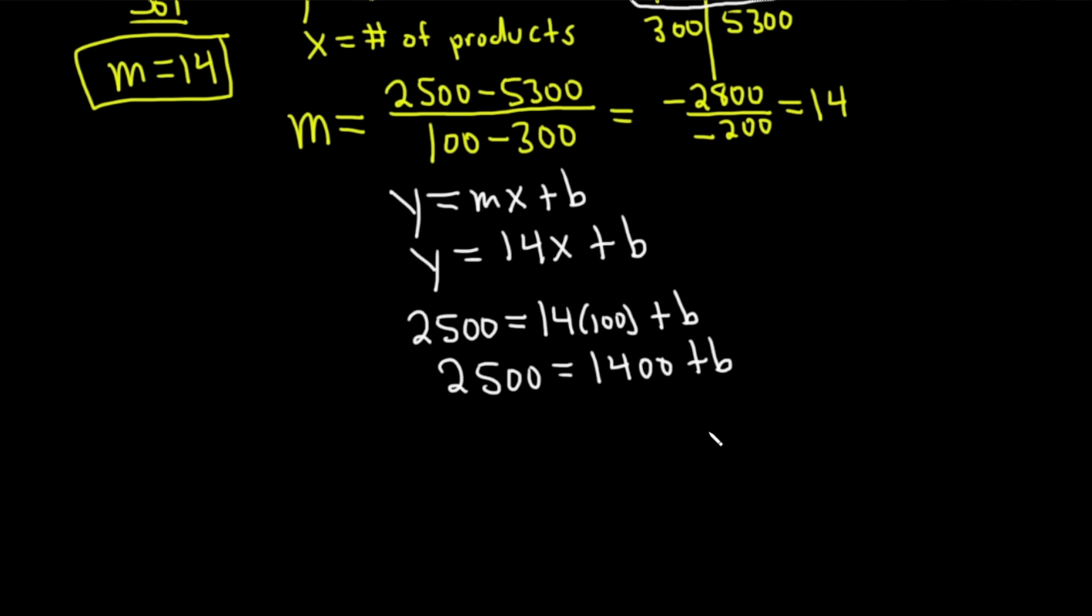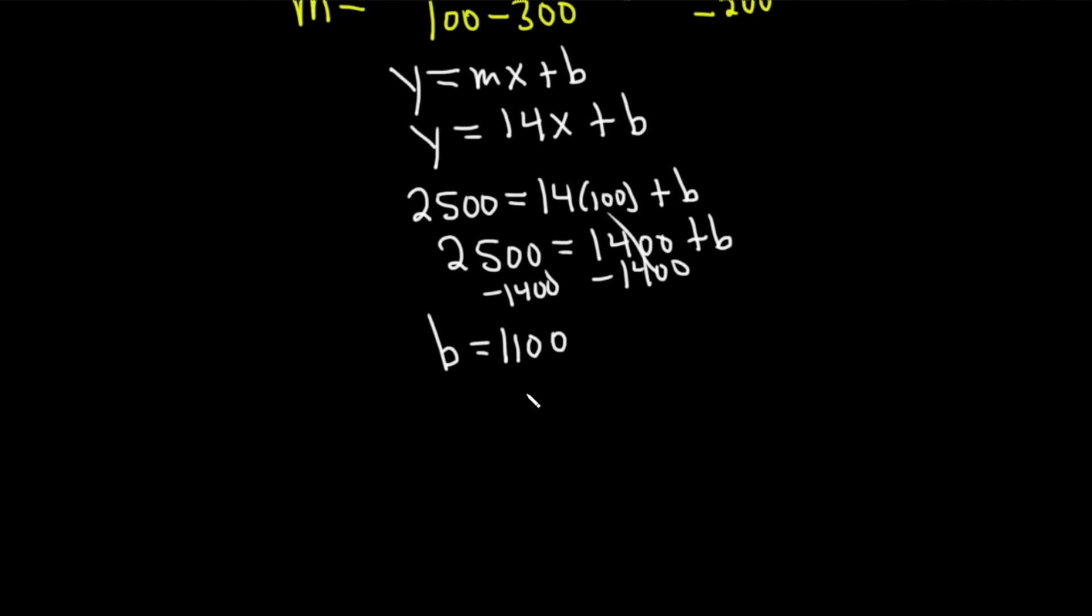So we have 2,500 equals 1,400 plus b. Now it's pretty easy. We can just subtract 1,400 from both sides. So minus 1,400 minus 1,400. I'm going to write the b over here on the left. So b equals 1,100.